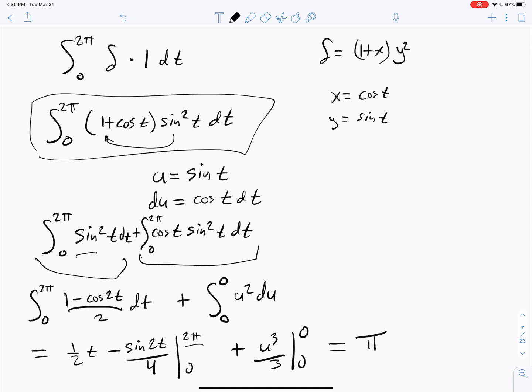Because if we plug in 2π, we'll get π. Plug in 0, we'll get 0. Plug in 2π for sine 2t, that'll be 0, as will sine of 0 be 0. So we'll have π plus some other stuff.